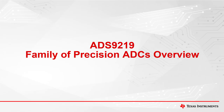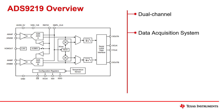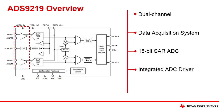Here is an overview of the ADS9219 family of Precision ADCs from Texas Instruments. The ADS9219 is a dual-channel data acquisition system. This 18-bit SAR ADC includes an integrated ADC driver to simplify the input circuitry design, all within a small package size.